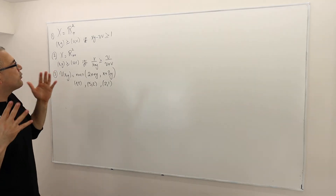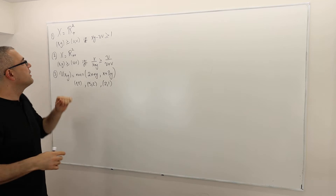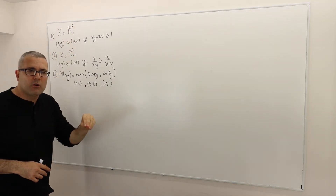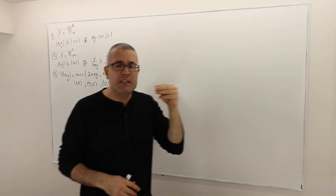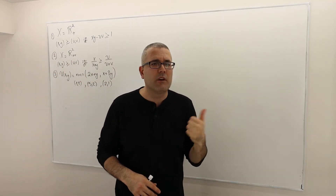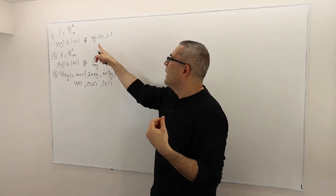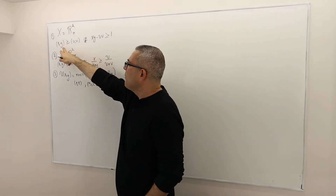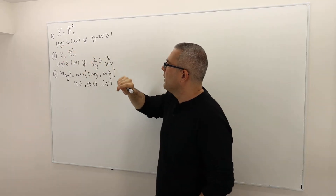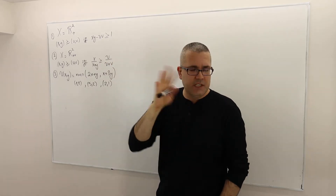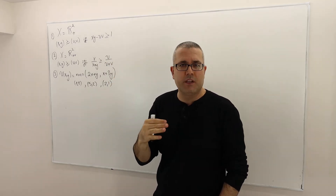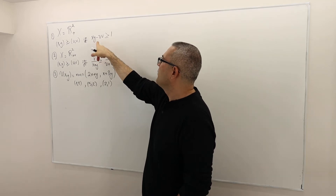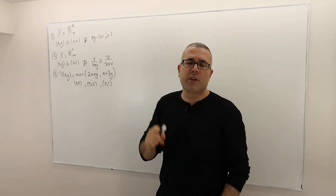There is a binary relation defined on R² plus — so zero is allowed, but negative numbers are not allowed. It says a bundle (x, y) is at least as good as bundle (u, v) if and only if x times y minus u times v is greater than or equal to 1.